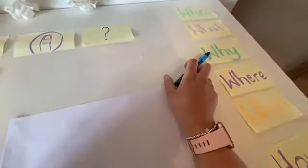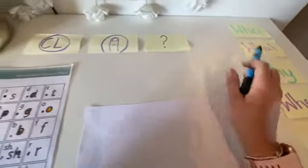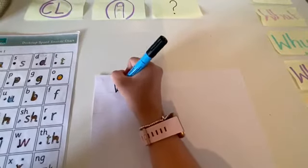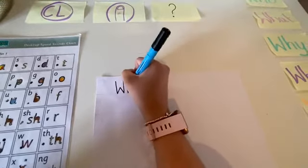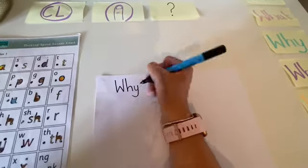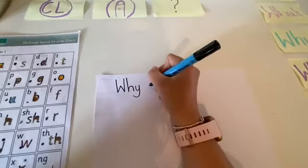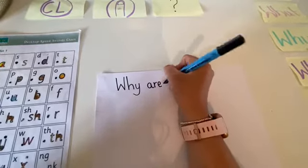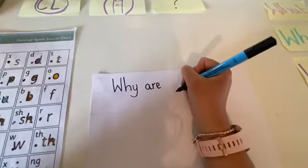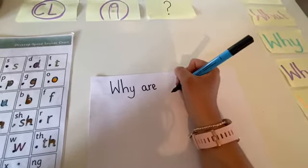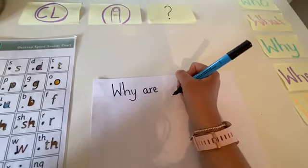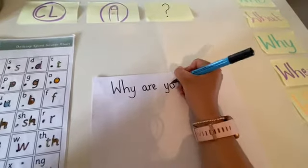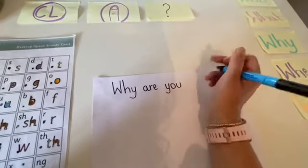I'm going to start my question with the word why, and I know that I need to use a capital letter. Y, finger space. Are, it's quite a lot of tricky words in this sentence. Are, finger space. You. Can you tell your adult how to spell you? Oh, super.